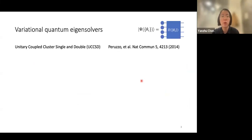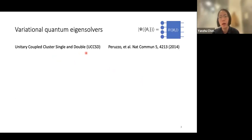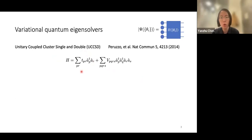The first proposed variational quantum eigensolver is the unitary coupled cluster singles and doubles (UCCSD) VQE, inspired by classical computational chemistry. The goal is to find the ground state energy of a molecular Hamiltonian given by the Hubbard Hamiltonian, where the a's are fermionic operators.